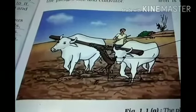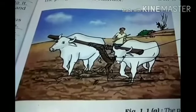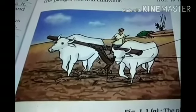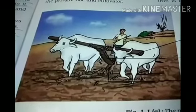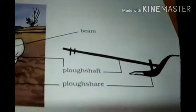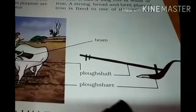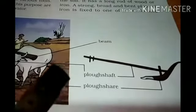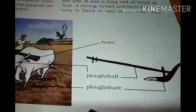Since only a few centimeters of the top layer of soil supports plant growth, turning and loosening brings nutrient-rich soil to the top so plants can use these nutrients. The process of loosening and turning of soil is called plowing or tilling. Here you can see a farmer plowing the land using a plow, which has a sharp blade. The wooden strip is known as the plow shaft and the blade part is known as the plow shear.